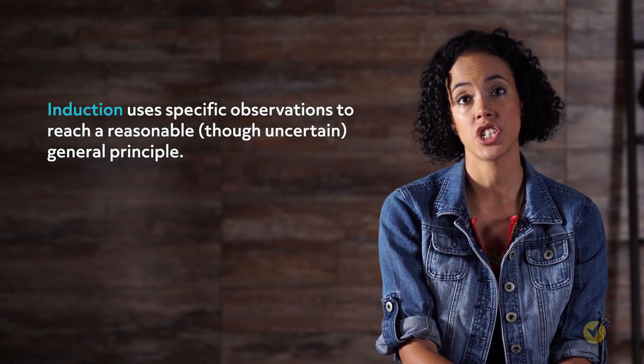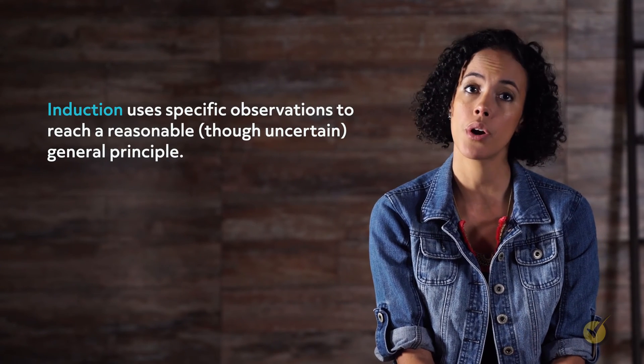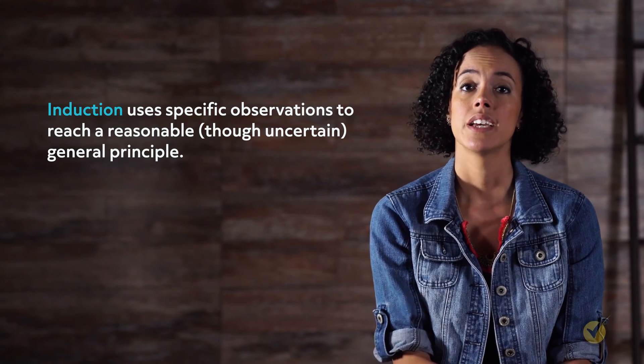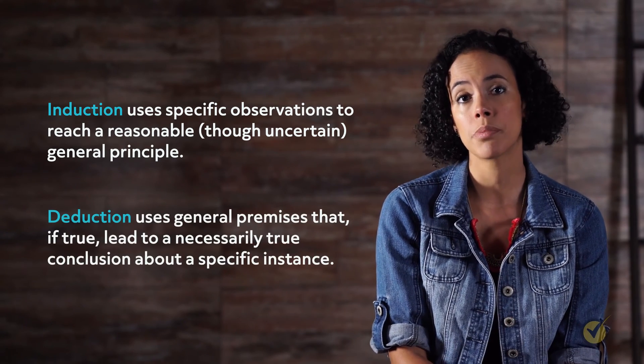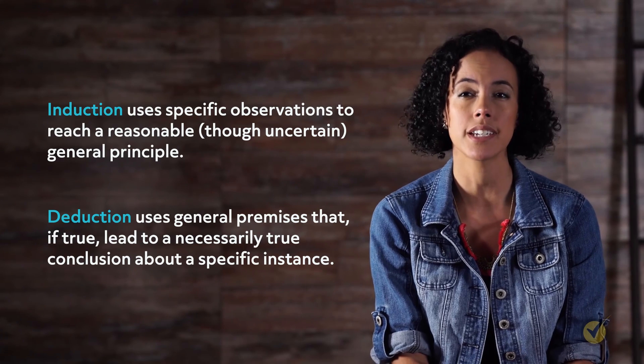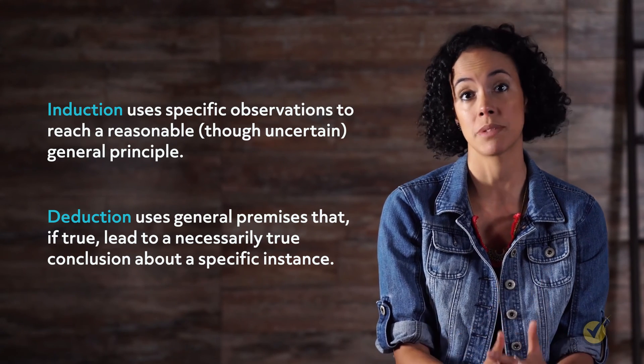Considering the validity and soundness of a deductive argument is important. It is also important to remember that deduction is based on the form of the argument — general to particular — and so long as the premises are both valid and sound, the preceding conclusion will also be true. To reiterate the major feature distinguishing induction from deduction: induction uses specific observations to reach a reasonable, though uncertain, general principle, and deduction uses general premises that, if true, lead to a necessarily true conclusion about a specific instance.